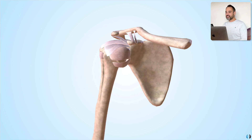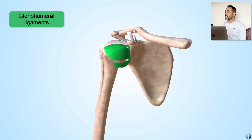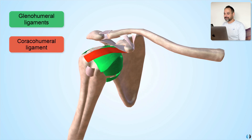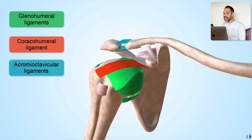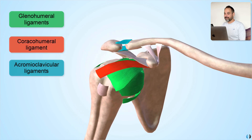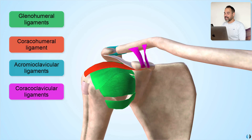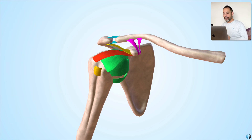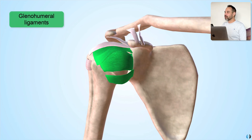In this tutorial we're going to dive into the glenohumeral ligaments, the coracohumeral ligament, the acromioclavicular ligaments, the coracoclavicular ligaments, and a couple of extras to help us along the way that are also super important. So let's start off with the glenohumeral ligaments.